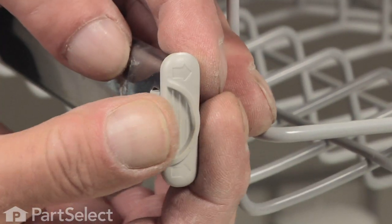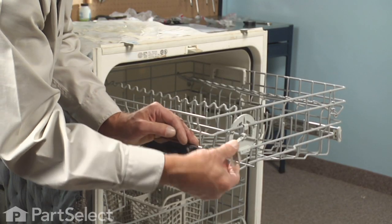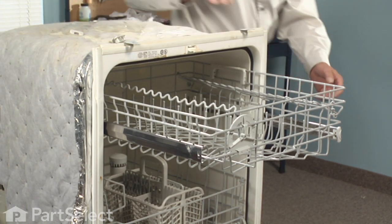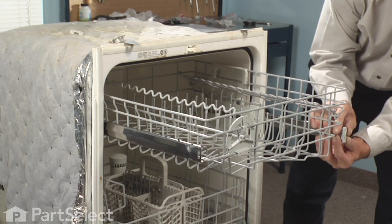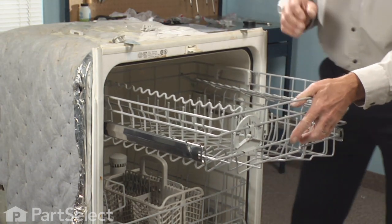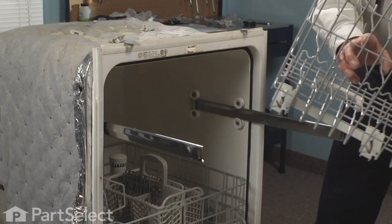Remove the guide stops by rotating the tab towards the center of the dishwasher, sliding the guide stop out. Same on both sides. Now the rack will pull completely out of the track and we can put it on a convenient work space.